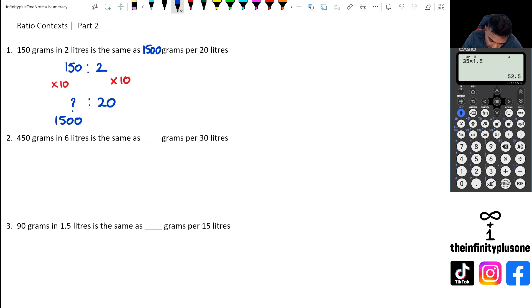And so looking at question two, we've got 450 to 6, and we want to convert that 6 into a 30 and we want to try and figure out how many of these grams is going to be for that. Now looking at 6, we're multiplying 6 by 5 to get to 30, which means we've got to do 450 times 5 to get the actual grams. And of course I'm just going to use the calculator here. 450 times 5 is going to give us 2250, and that's going to be the number of grams per 30 liters.